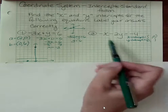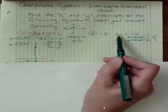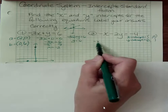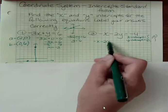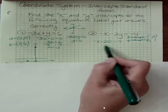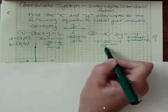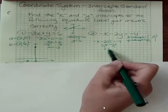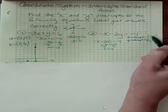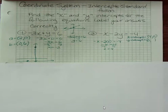Now, if the y is zero here, I'm going to get negative x minus two times zero is negative four. And then divide both sides by negative one and x equals four. So my x intercept would be four.